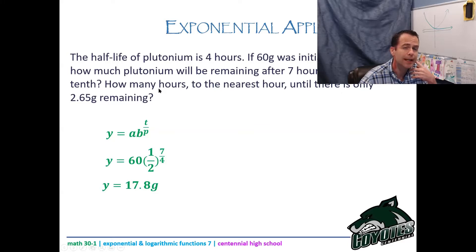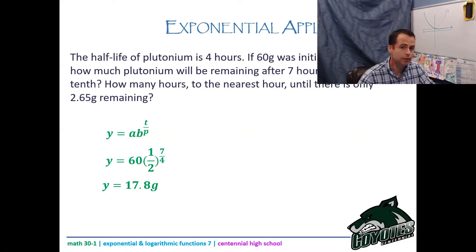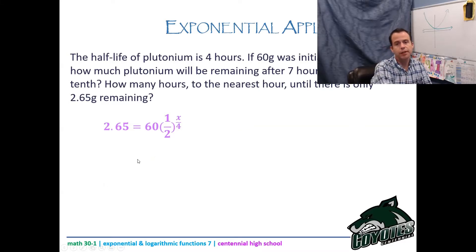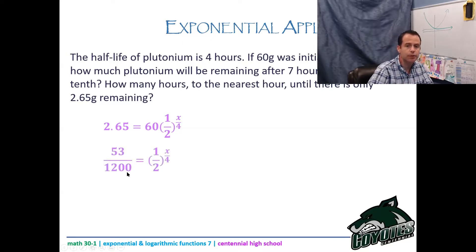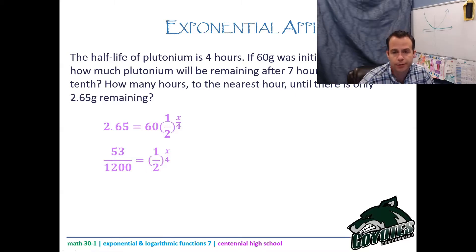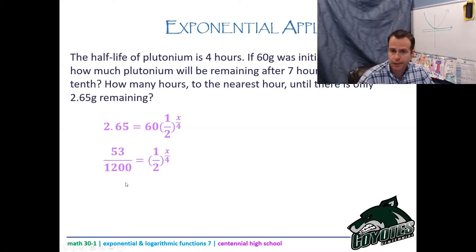The second part asks how many hours until only 2.65 grams remain, so 2.65 is now y and we're solving for t. Plug in 2.65 for y, divide both sides by 60, then switch to log form. That gives log base (1/2) of (53/1200) = t/4. Note: 53/1200 is just 2.65 ÷ 60 as a fraction from the calculator.